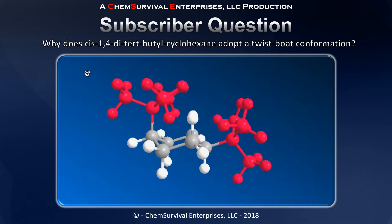The molecule will want to seek out a way to relieve it — to get that t-butyl group more space. We would typically do a chair flip or ring flip to get this axial substituent down into the equatorial position where there's more room. The problem is that a chair flip switches all axials for equatorials and all equatorials for axials, so the second t-butyl group would go from equatorial into axial and recreate the same set of steric clashes.